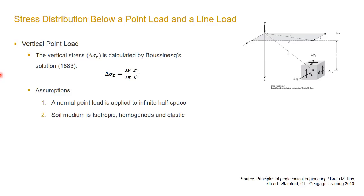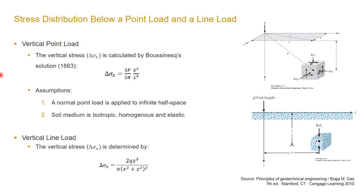In Boussinesq's solution, the soil mass is assumed to be an infinite half-space with isotropic, homogeneous, elastic behavior. This is of course a rough approximation of the actual behavior of the soil mass. Similarly, for a line load on the soil surface, the induced stress at any point below the load can be calculated from the second equation. In a line load, q is a uniformly distributed load perpendicular to the plane, where x is the horizontal and z is the vertical distance of the point from the loading line.